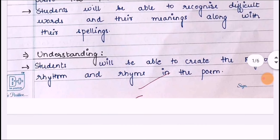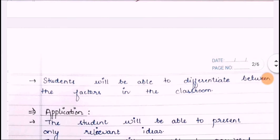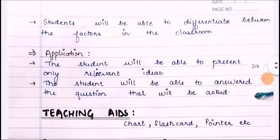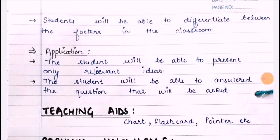Under understanding, students will be able to identify the keyword, rhythm, and rhyme in the poem. Second, students will be able to differentiate between the factors discussed in the classroom. Under application, students will be able to present only relevant ideas. Second, students will be able to answer questions that will be asked.